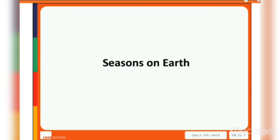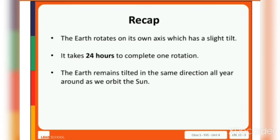The seasons on Earth — the Earth rotates on its own axis, which has a slight tilt. The axis is at 23.5 degrees. It takes 24 hours to complete one rotation. The Earth remains tilted in the same direction all year around as we orbit the Sun.